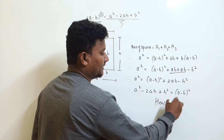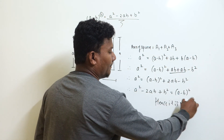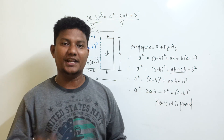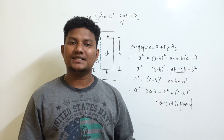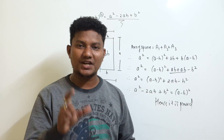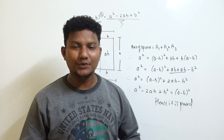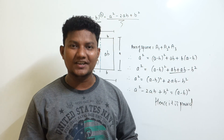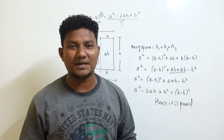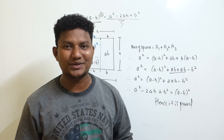Hence, it is proved. I hope you got the idea of how to derive (a minus b) whole squared using geometric shapes and geometric explanation. If you like the video, please like, share, comment, and don't forget to subscribe to my channel. Till then, goodbye — see you in the next video.